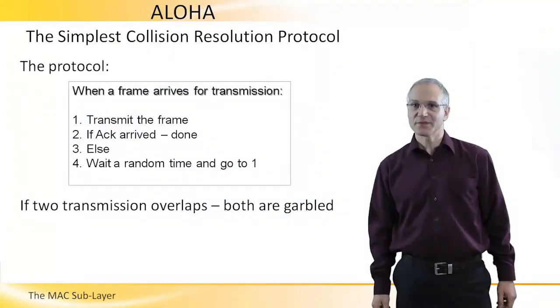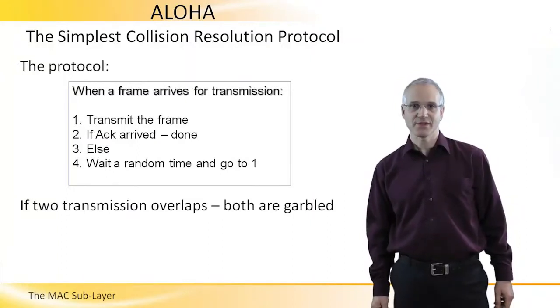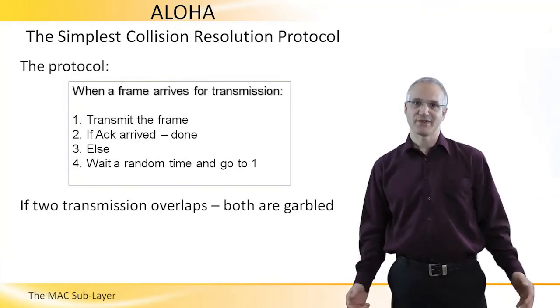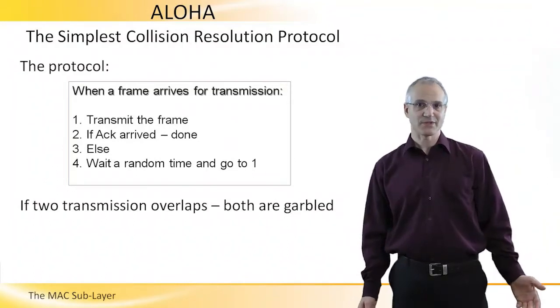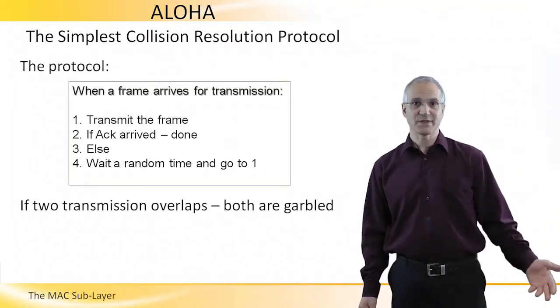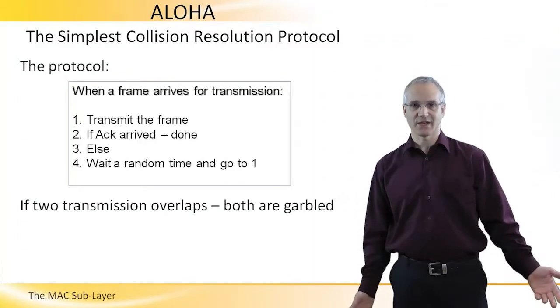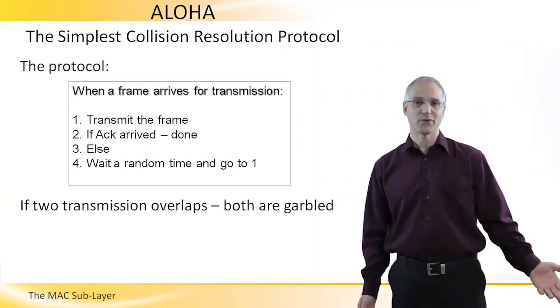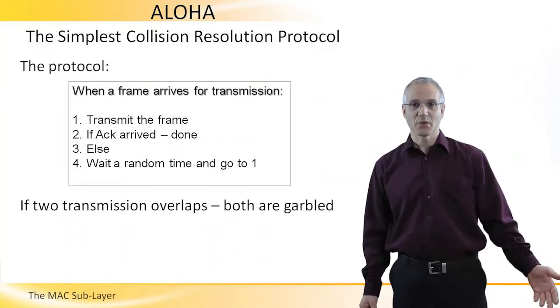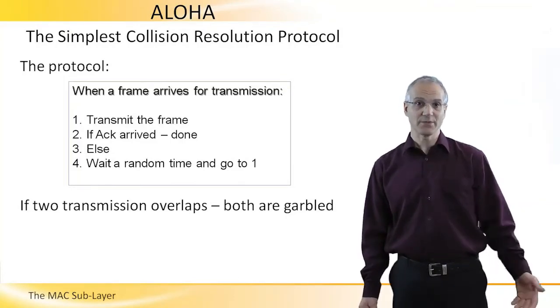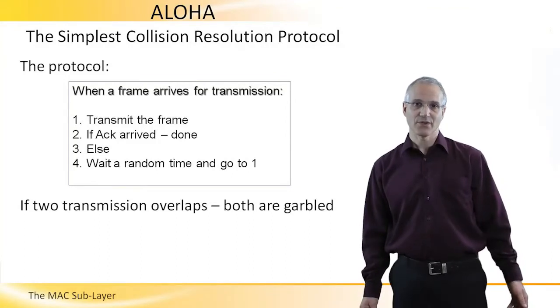The simplest of the collision resolution protocol is the Aloha protocol designed at the University of Hawaii in the 70s. Basically, the protocol is very simple. When a frame arrives for transmission, the station, the user, simply transmits the frame and waits for an acknowledgement. If an acknowledgement arrived, we're done. We know that the transmission of the packet or the frame was successful. Otherwise, we wait a random time and go to one, namely transmit again. Note that if two users transmit at the same time, their transmission overlaps, both transmissions are garbled, and none of the user is going to get an acknowledgement for its transmission.